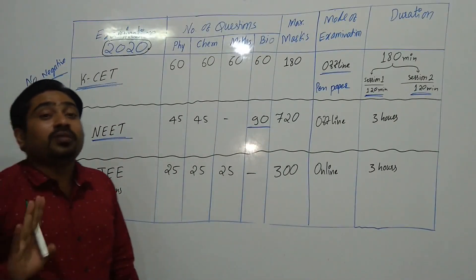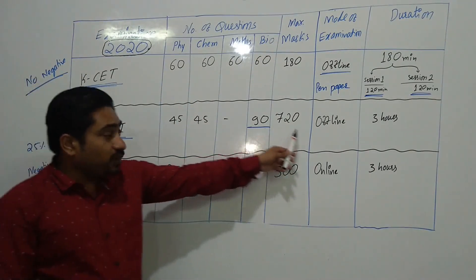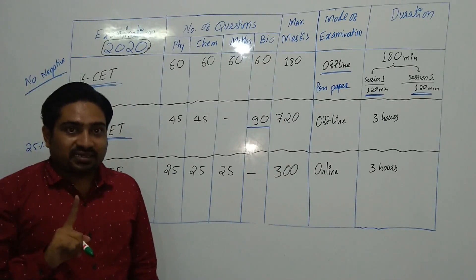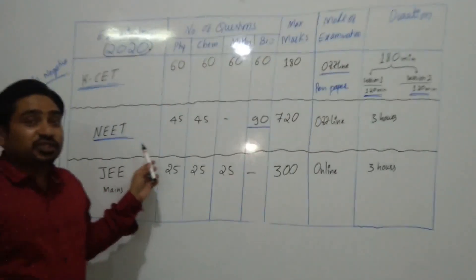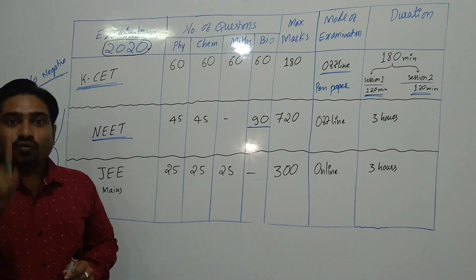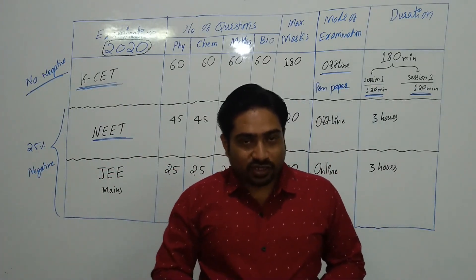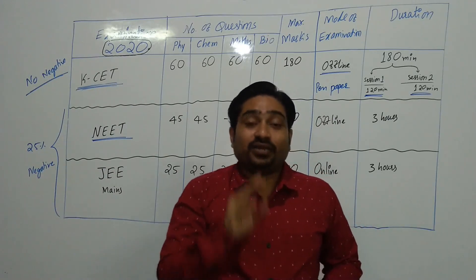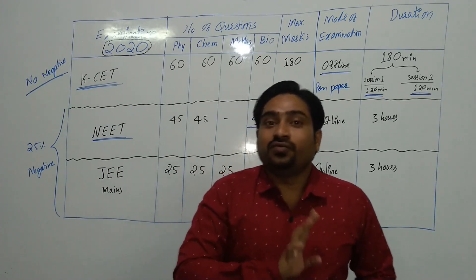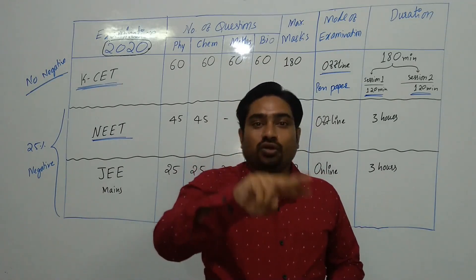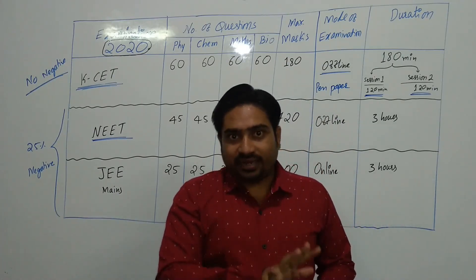Each question carries 4 marks, so the total maximum marks for NEET is 720 marks. NEET also contains 25% negative marking — meaning one wrong answer deducts 1 mark. For example, if you attempt 12 questions and 10 are correct: 10 × 4 = 40 marks. But if 2 answers are wrong, you lose 2 marks as negative marking.